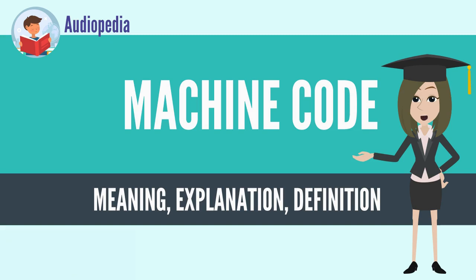However, the interpreter itself, which may be seen as an executor or processor performing the instructions of the source code, typically consists of directly executable machine code generated from assembly or high-level language source code. Machine code is by definition the lowest level of programming detail visible to the programmer.